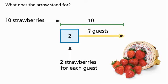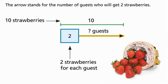What does the arrow stand for? The arrow stands for the number of guests who will get two strawberries.